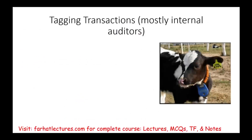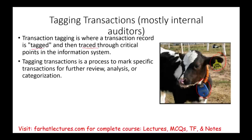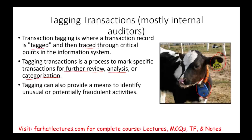Tagging transaction is mostly used by internal auditors but can also be used by external auditors. Think of a tagged cow being followed everywhere it goes on the field. Similarly, a transaction record is tagged and traced through the critical points in the information system to monitor what's happening — where it went and whether it ends up in the right place. It provides a means to identify unusual or potentially fraudulent activities, using the client's data and program to tag transactions through their system.